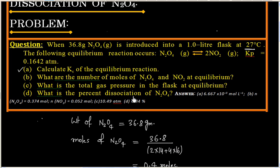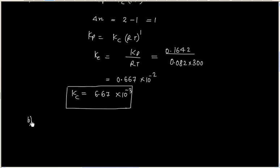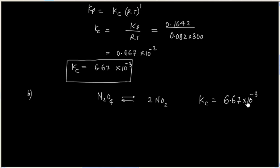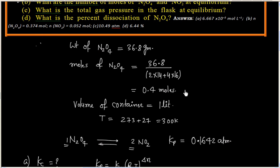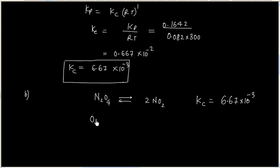Part B of the question asks: what is the number of moles of N2O4 and NO2 at equilibrium? So we have to calculate moles of both species. Kc is known as 6.67 into 10 to the power minus 3. The initial moles of N2O4 is 0.4.